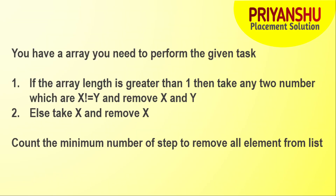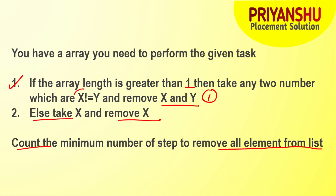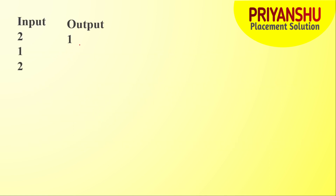The question I have written in my own language. Basically, you have an array and you need to count the minimum number of steps to remove all elements from the list. The first step is: if the array length is greater than one, take any two numbers x and y where x does not equal y, and remove x and y. The second step is: take x and remove x if the array length condition is not met.